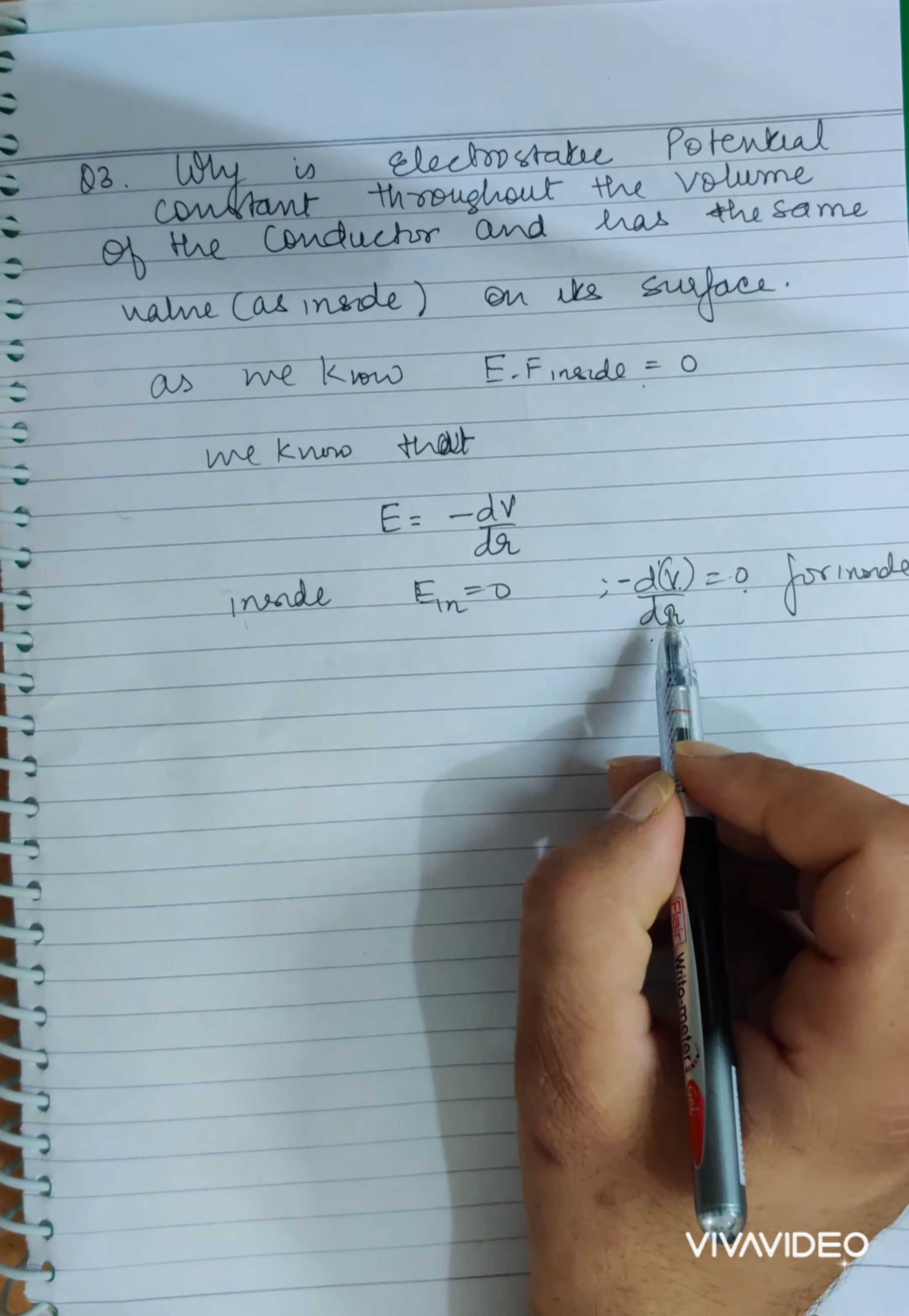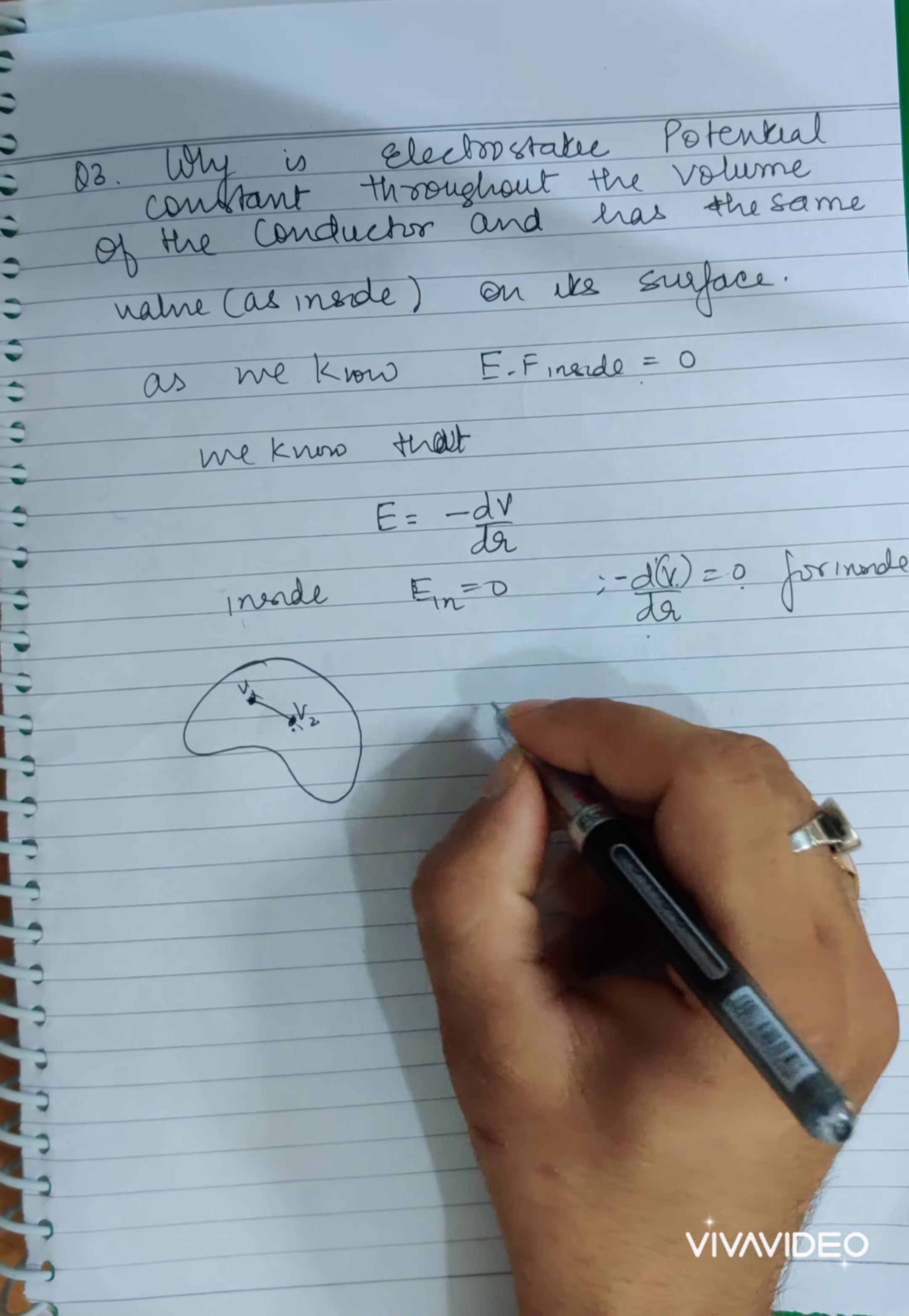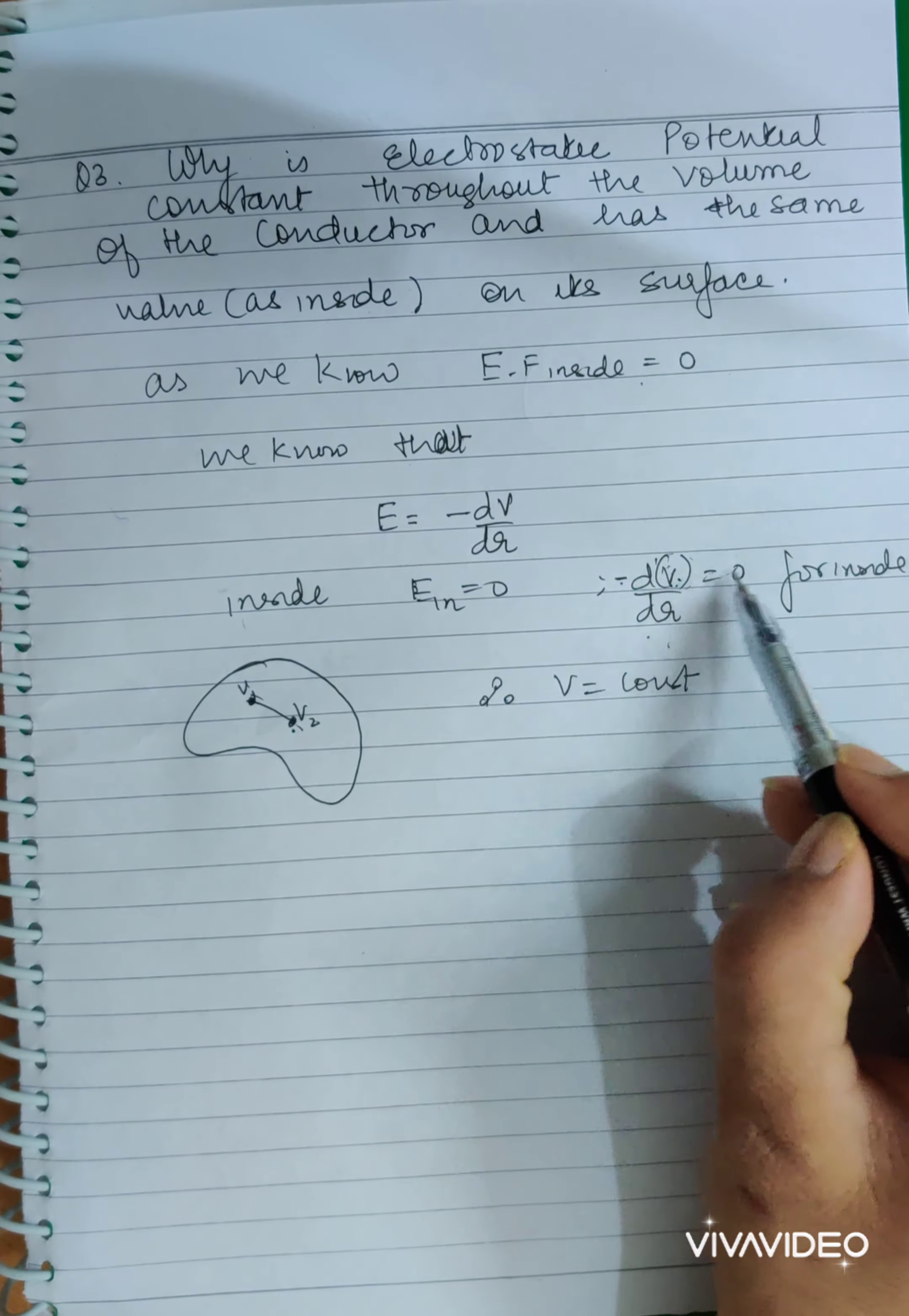Now, the differentiation of a quantity is zero, which means that quantity is constant. So inside, the two potentials are always the same. Therefore, V equals constant. Why is V constant? Because dV by dr is zero, so differentiation of only a constant quantity can be zero.